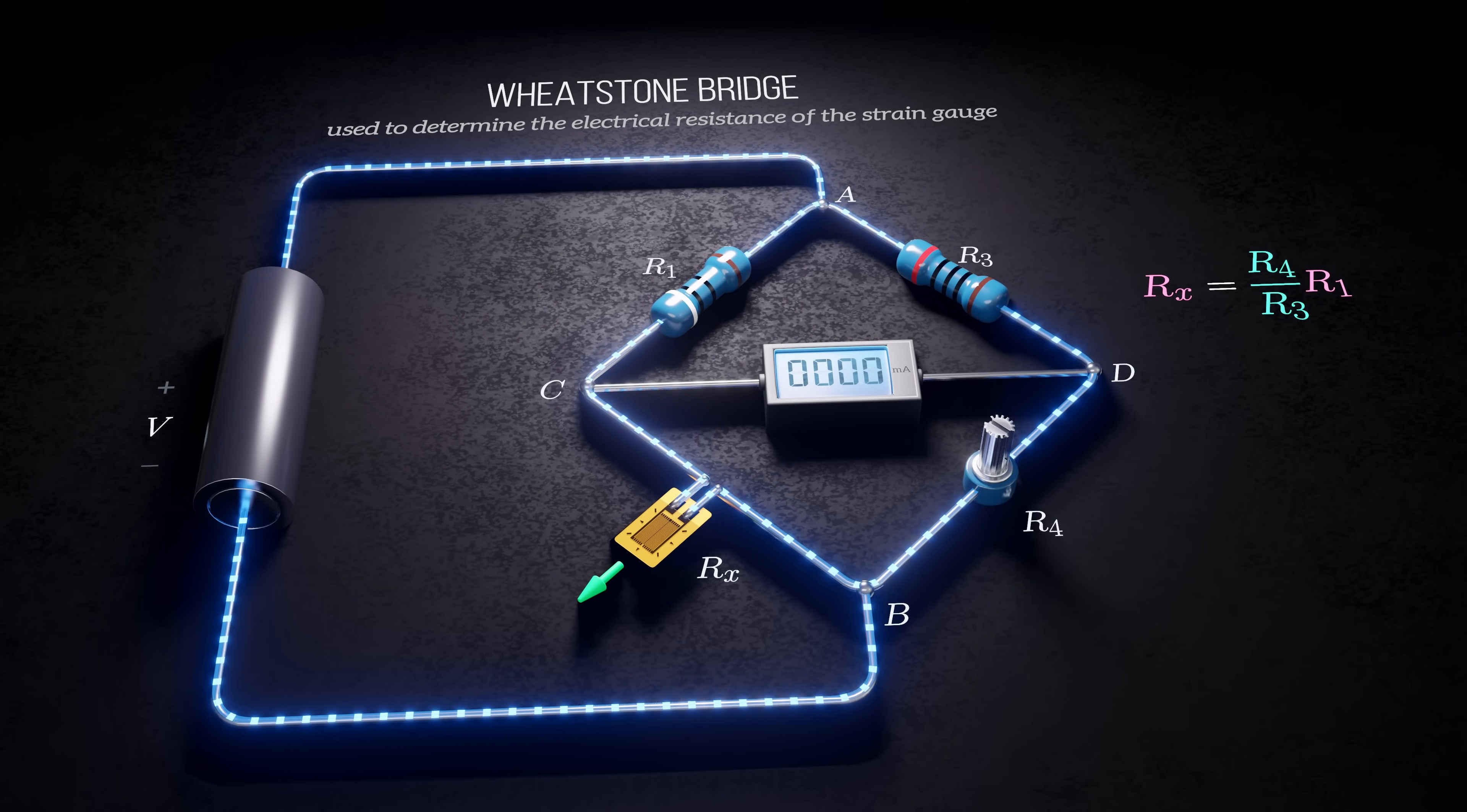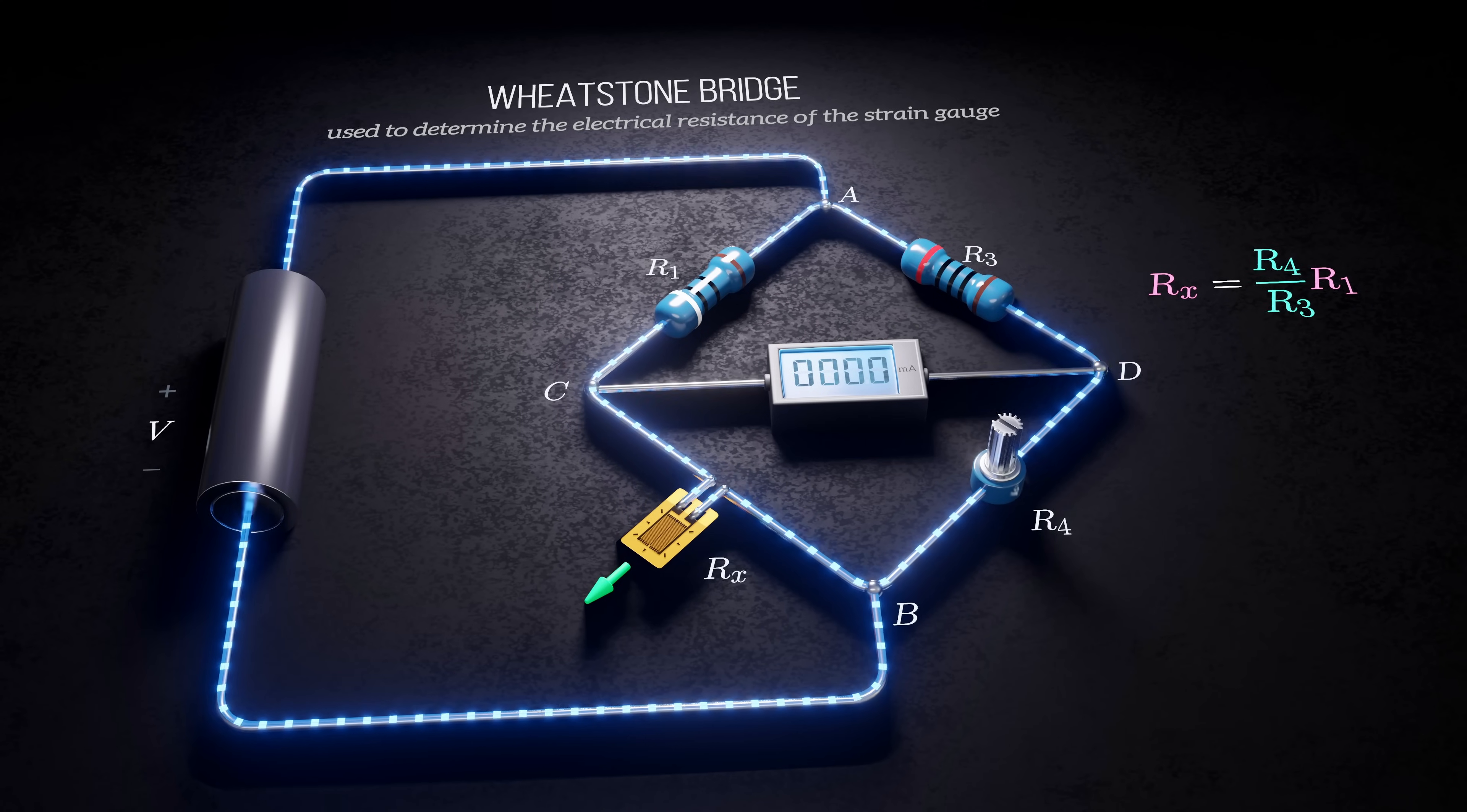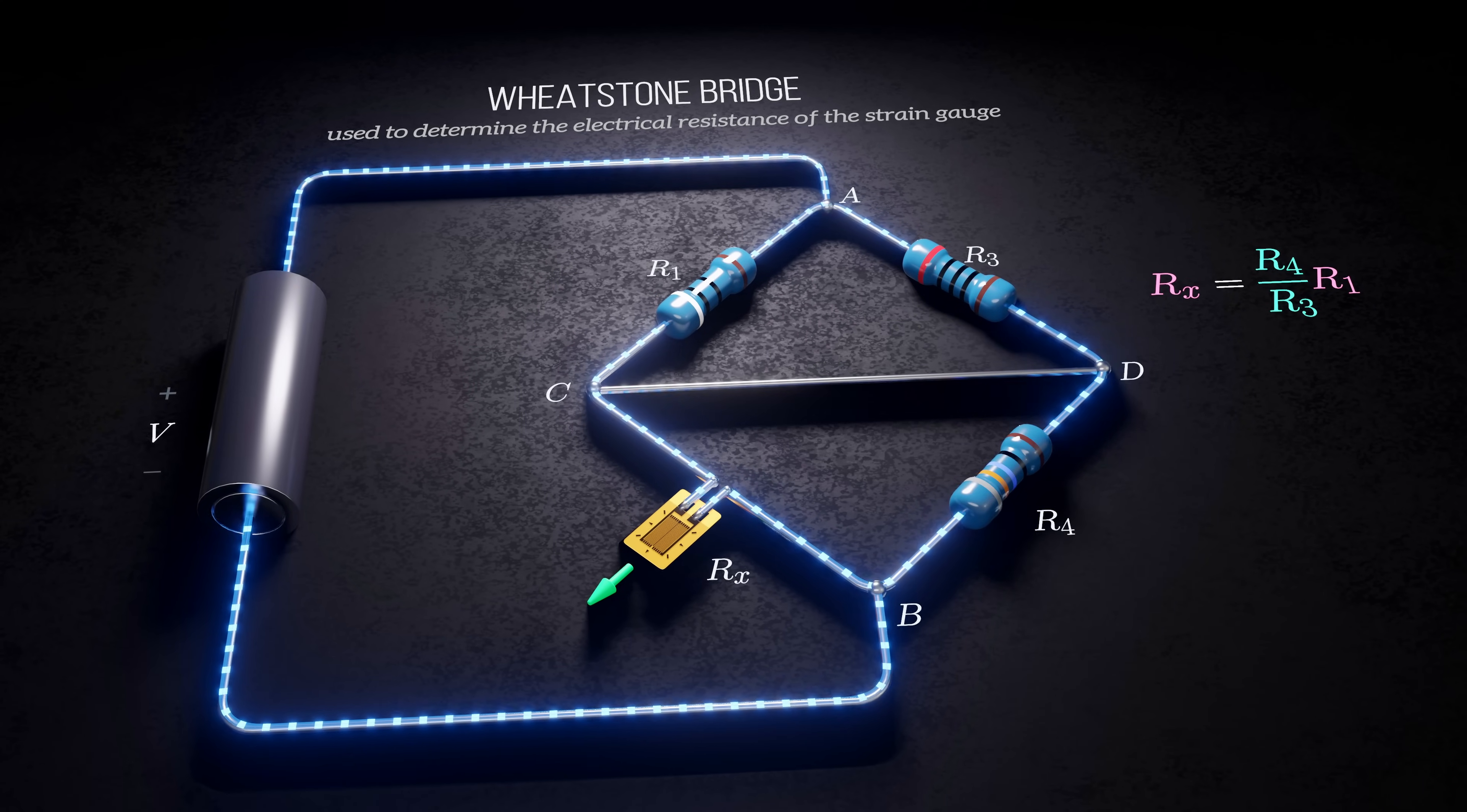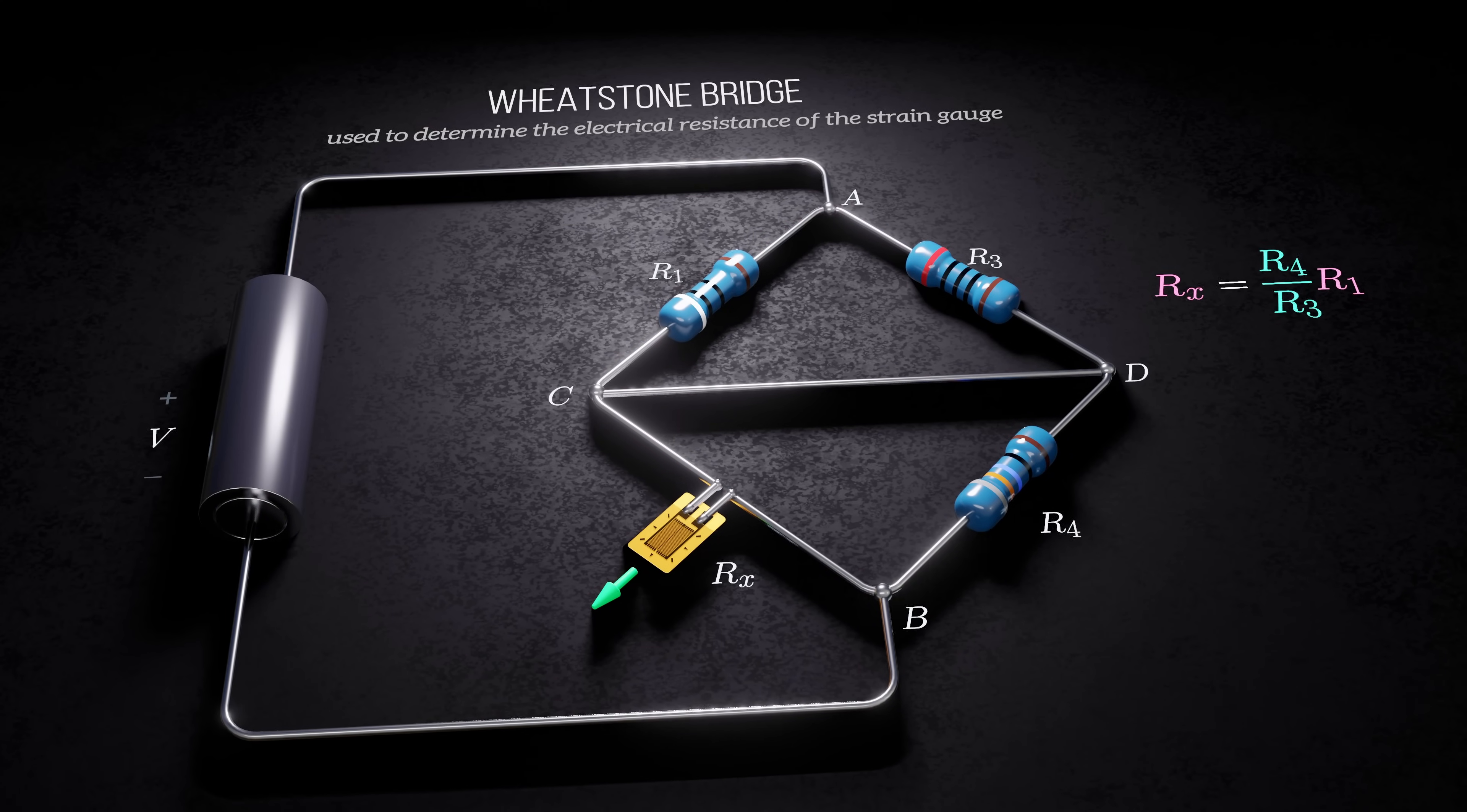In some cases, instead of using an adjustable resistor and a galvanometer, the voltage across segment CD is measured, and the resistance of the strain gauge is calculated using the voltage instead of having to balance the bridge.